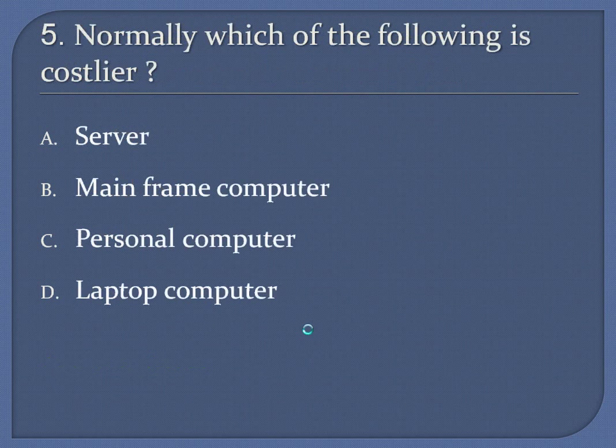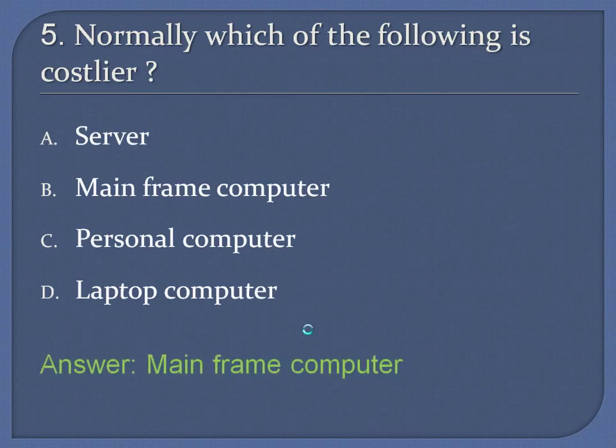Question 5: Normally which of the following is costlier? A. Server. B. Mainframe computer. C. Personal computer. D. Laptop computer. Answer: Mainframe computer.